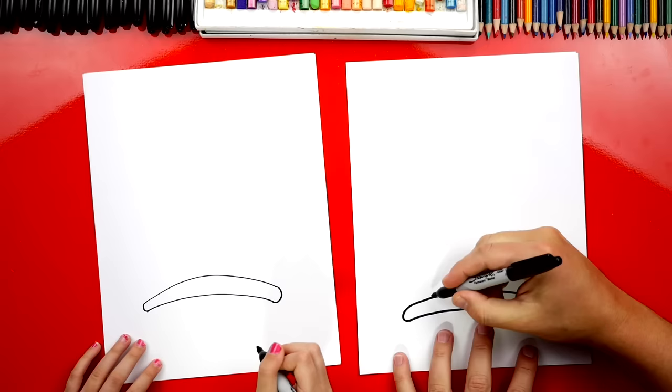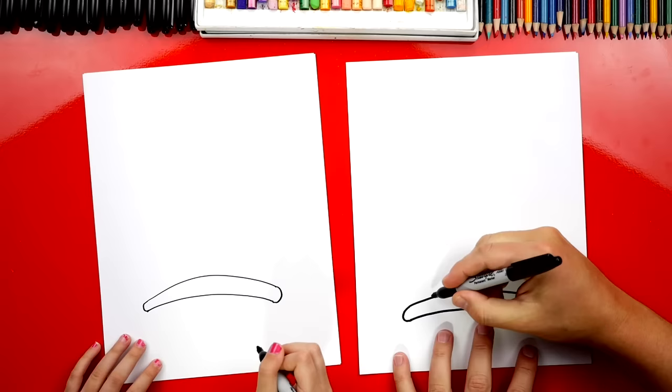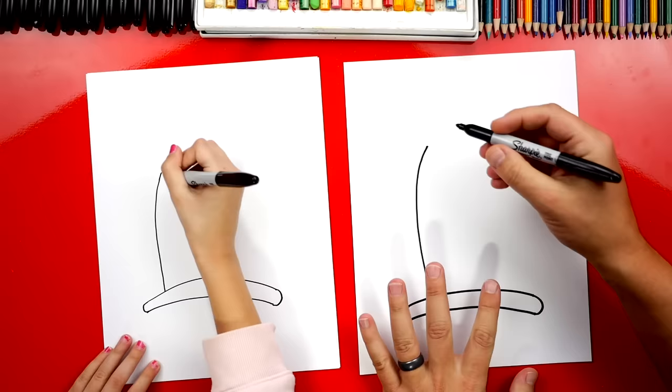Now we're going to draw the top of the hat next. We're going to start over here and draw a big curve that comes up. Now we're going to draw the top of our hat. We're going to draw it coming across like this and only about halfway.